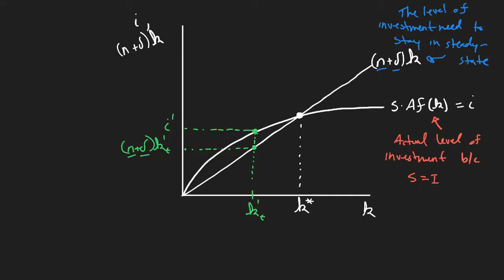So what we notice is we have more investment. We have more i than needed. So what makes sense here is we'll see k start to grow. And you'll see that the difference between here is actually how much this k is going to grow for the next period because I have more investment into capital than what's needed.